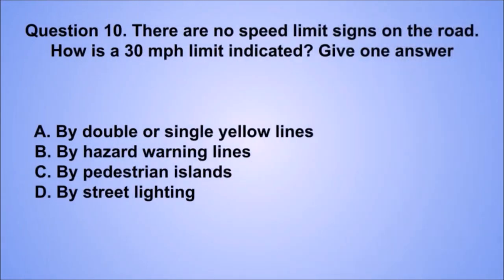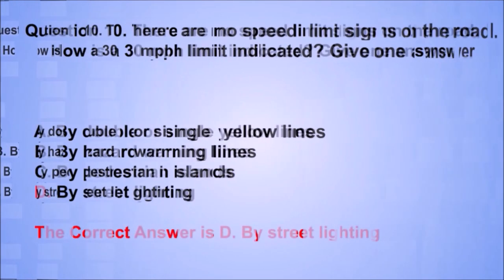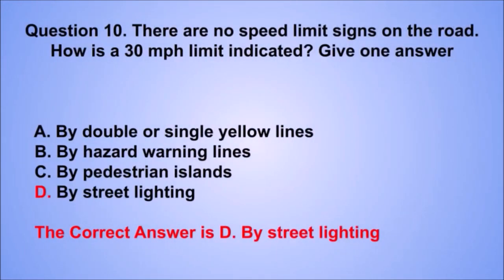Question 10. There are no speed limit signs on the road. How is a 30 miles per hour limit indicated? The correct answer is D: By street lighting.